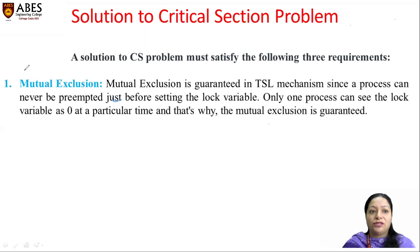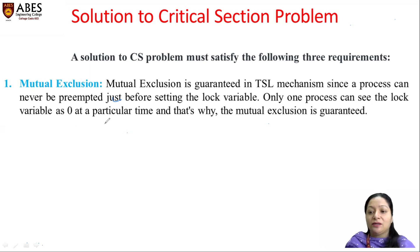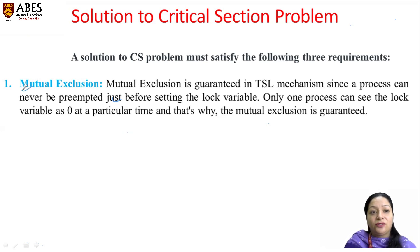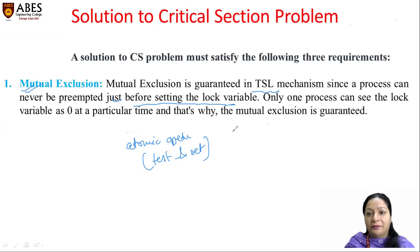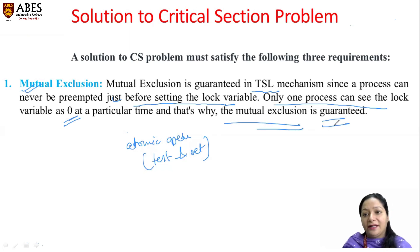When we discussed the Peterson solution, we noted that three conditions must be satisfied for any solution to the critical section problem: mutual exclusion, progress, and bounded waiting. Let us check whether these are satisfied in the test and set mechanism. We have already seen that mutual exclusion is guaranteed because a process can never be preempted just before setting the lock variable — we are using atomic operations. Only one process can see the lock variable as zero at a particular time, so mutual exclusion is definitely preserved.